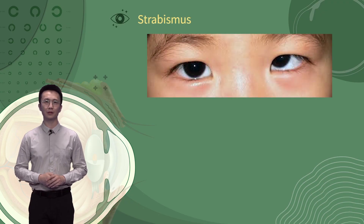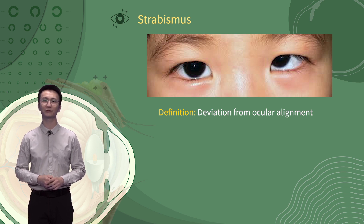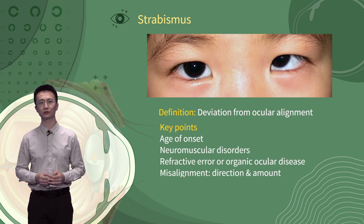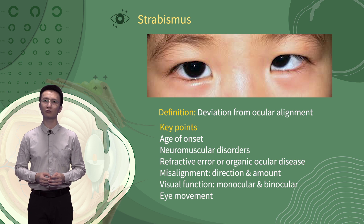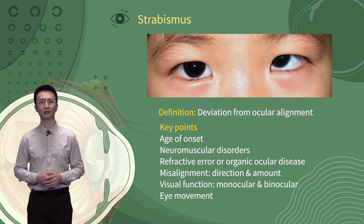Any ocular misalignment such that only one eye views the object of regard with the correct orientation is called strabismus. In clinical practice, we can reach a comprehensive diagnosis of strabismus by the following factors: the age of onset; conditions including neuromuscular disorders, tumor, trauma, endocrine disease, or developmental abnormalities; refractive error and organic ocular disease; monocular and binocular visual function; the direction and amount of misalignment; and the motor function of extraocular muscles.